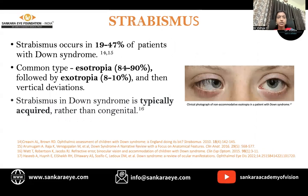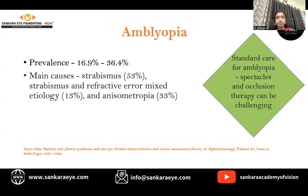Strabismus is common in these children, the most common type being esotropia followed by exotropia and vertical deviation. The strabismus in Down syndrome is typically acquired rather than congenital. Amblyopia prevalence ranges between 16.9% to 37%, with main causes being strabismus followed by mixed etiology and anisometropia. Standard care for amblyopia, mainly spectacles and occlusion therapy, can be very challenging in these children.